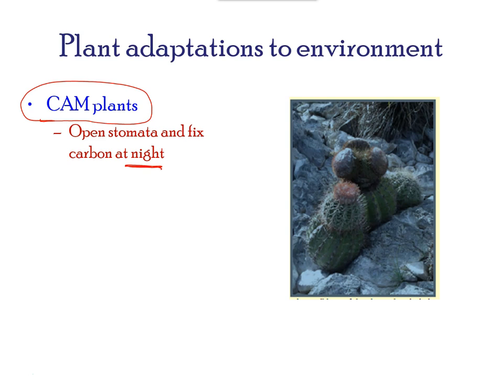Photoautotrophs utilize environmental carbon dioxide. Human disruption is changing the balance of carbon dioxide in the atmosphere, also resulting in global warming.